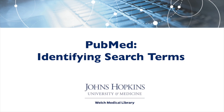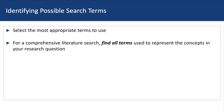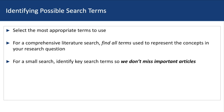When searching for articles on a specific topic, it's important to select the most appropriate terms to use. Doing this often requires preliminary legwork in order to develop the best search strategy possible. In a comprehensive literature search where the goal is to identify all relevant articles, it's worth the time and energy spent finding all possible terms that might be used to represent the concept in your research question.